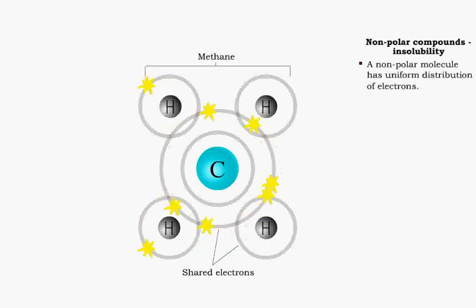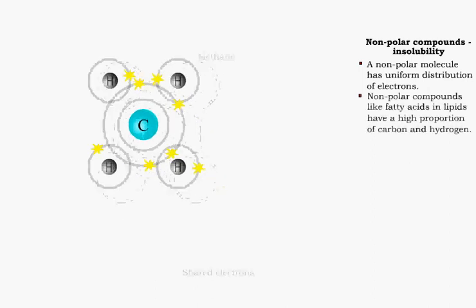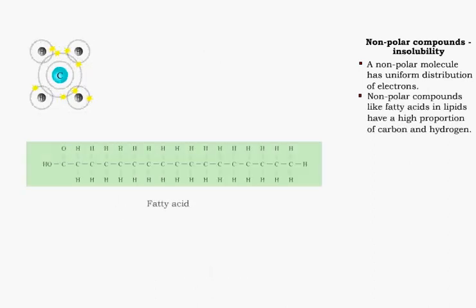Non-polar covalent compounds are uniformly distributed. Compounds such as lipids are made up mostly of carbon and hydrogen. These are considered non-polar.